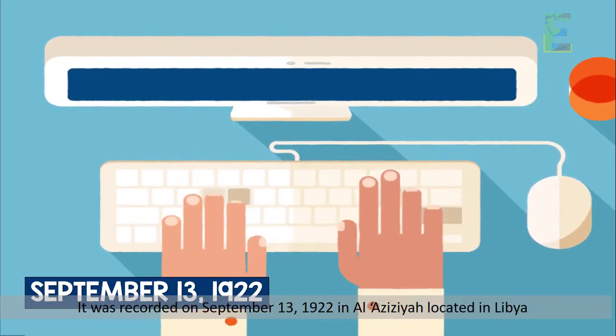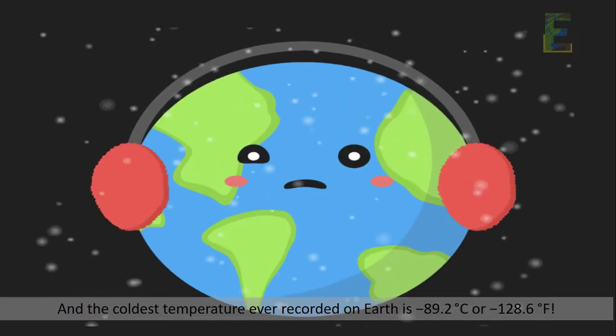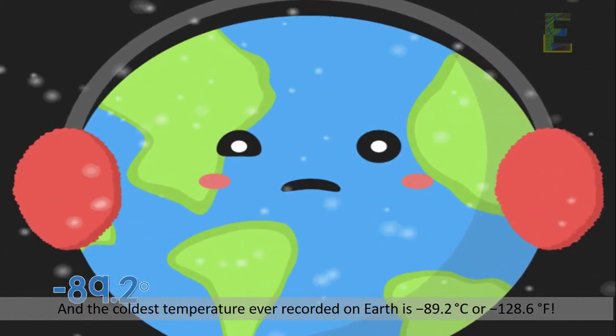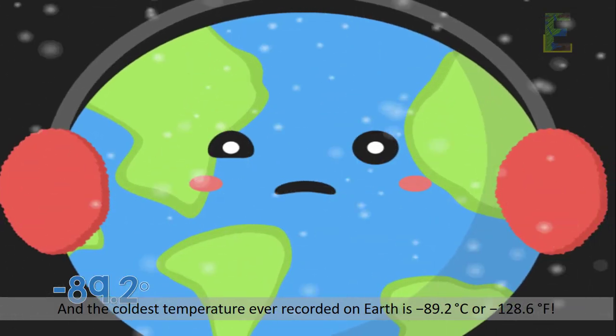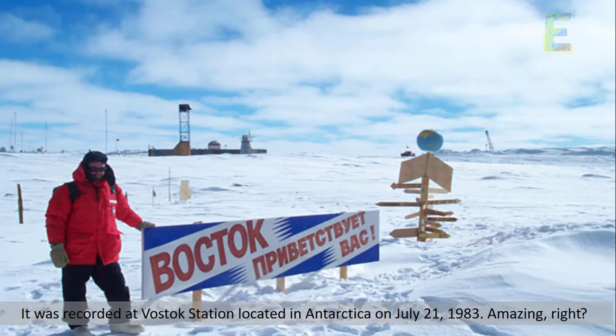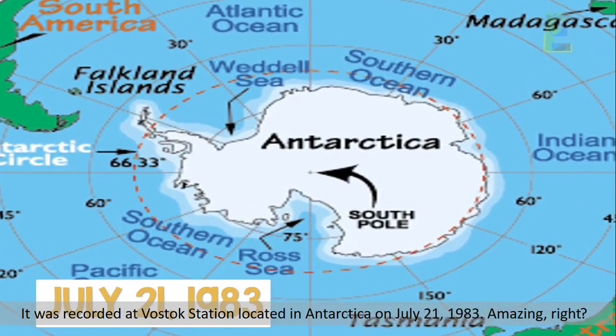1922 in Al Zizia located in Libya. And the coldest temperature ever recorded on Earth is negative 89.2 degrees Celsius or negative 128.6 degrees Fahrenheit. It was recorded at Vostok Station located in Antarctica on July 21, 1983. Amazing right?